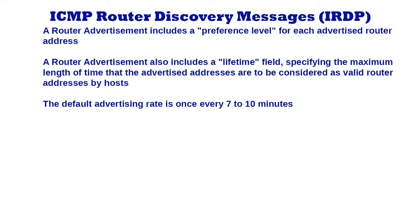The default advertising rate is once every 7 to 10 minutes and the default lifetime is 30 minutes. This means that using the default values, the advertisements are not sufficient as a mechanism for black hole detection, that is detection of failure of the first hop of an active path. Ideally, black holes should be detected quickly enough to switch to another router before any transport connections or higher layer sessions time out. It is assumed that hosts already have mechanisms for black hole detection.